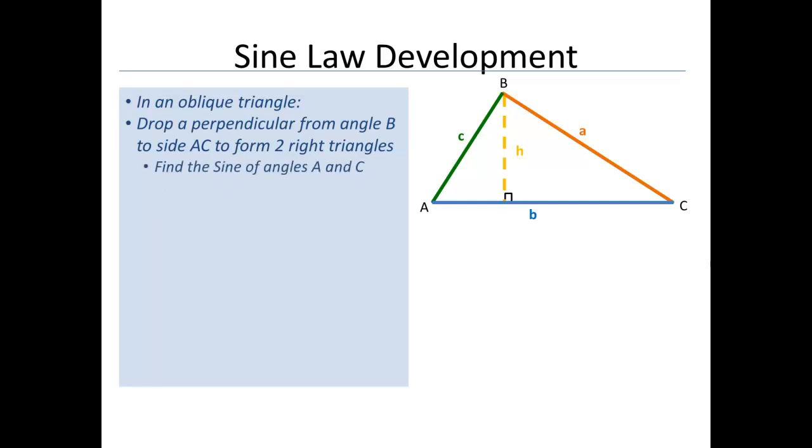So what we're going to do is we're going to take the sine of angle A and we're going to take the sine of angle C. When we do this, remember that sine is opposite over hypotenuse, so sine of A is opposite H over hypotenuse C. And sine of angle C is opposite H over hypotenuse A.